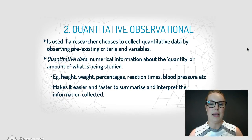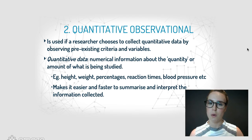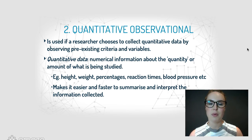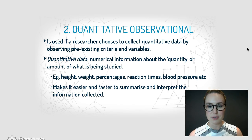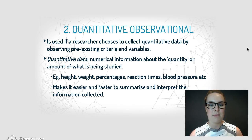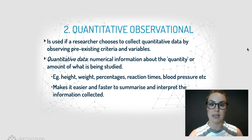With this investigation design, it's used if a researcher chooses to collect quantitative data — remembering that's numerical data — to observe pre-existing criteria and variables. This is numerical information, so it could be things like height, weight, percentages, blood pressure, and this kind of data makes it easier and faster to summarize and interpret the information collected.